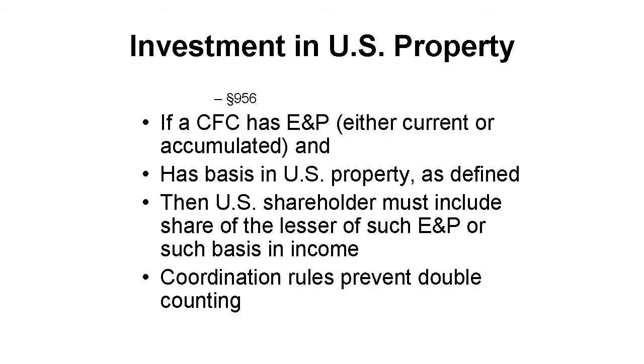If a CFC has earnings and profits, or E&P, and has basis in any U.S. property, then the U.S. shareholder must include in his, her, or its income the lesser of the E&P or the basis in that property. Each of these terms is defined. There are rules to keep the same earnings from being counted twice. This Section 956 inclusion happens whether the investment in U.S. property is by a first-tier controlled foreign corporation, or by a lower-tier CFC.